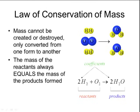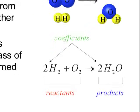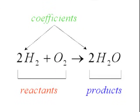When looking at a chemical equation, the mass of the reactants always has to equal the mass of the products. Another way of saying that is that the number of atoms that react have to equal the number of atoms that are produced. Reactants are always on the left side of the equation before the yield sign, and products are always on the right side after the yield sign. In order to make sure the reaction follows the law of conservation of mass, you have to add coefficients before the chemical formulas.